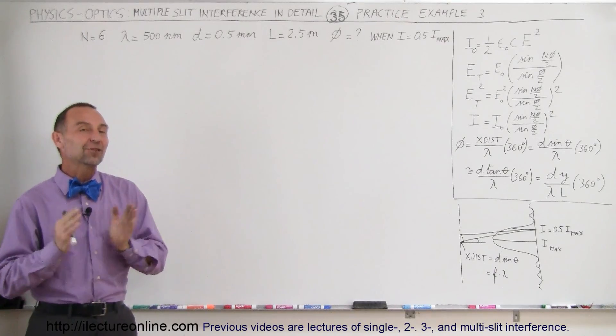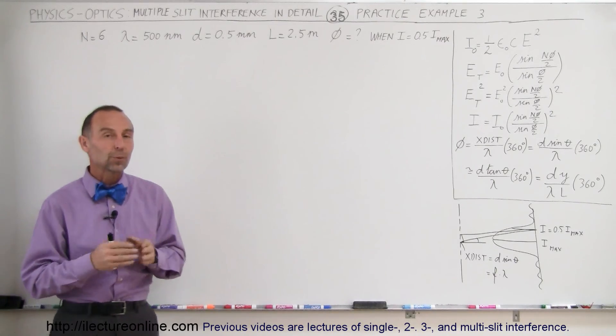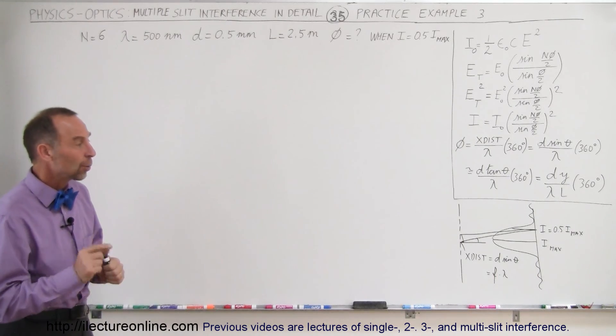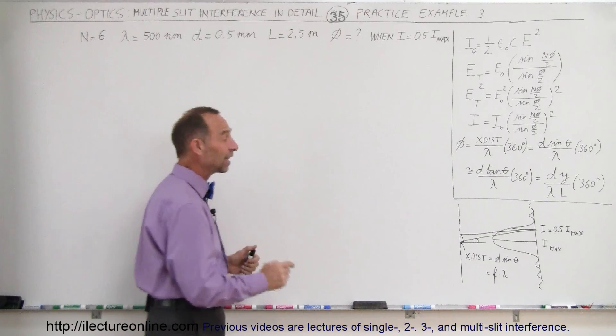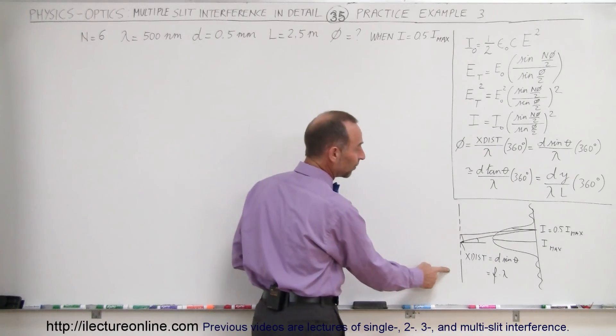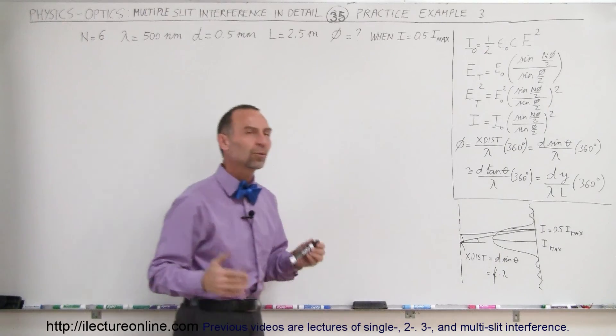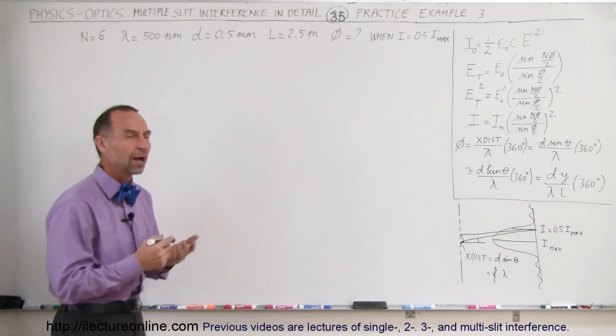Welcome to ElectronLine and now we have an interesting example, a third example, where we're trying to find the phase difference. The conditions are that we want to find the phase difference such that with a six-slit system, the intensity will be half the maximum intensity. What phase difference is required to accomplish that?